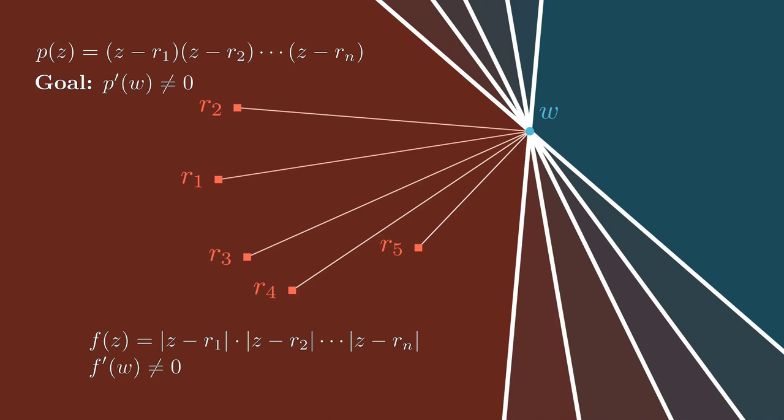And now pick a vector that points into all of the blue half spaces simultaneously. And the fact that I can find a vector that points into all of the blue half spaces, that means that f prime of w does not vanish.